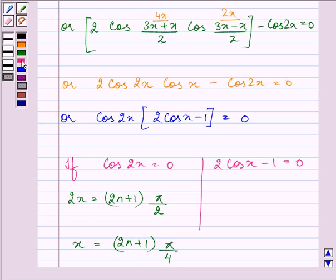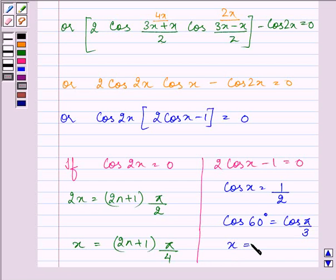Whereas if 2 cos x minus 1 is equal to 0 that means cos x is equal to 1 by 2. That is equal to cos 60 degrees is equal to cos pi by 3 and hence x is equal to 2n pi plus minus pi by 3.